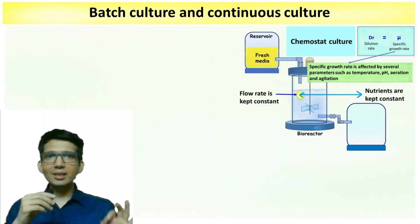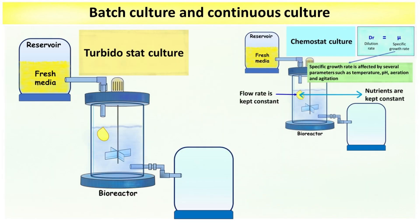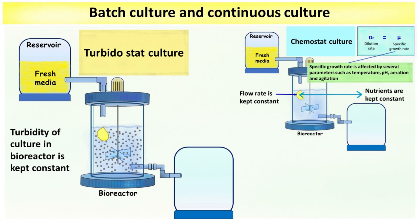To solve this problem, scientists came up with a new idea known as the Turbidostat. The growth of culture in the bioreactor results in turbidity, and in a Turbidostat, the turbidity of the culture in the bioreactor is kept constant. This is achieved using an instrument that continuously monitors the turbidity.